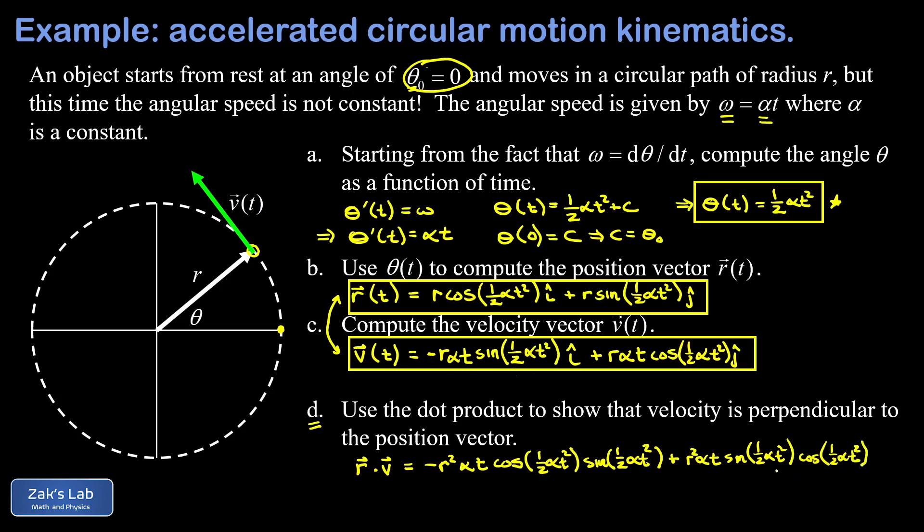So these two terms are actually identical, except one has a minus sign and one has a plus sign. This means our dot product vanishes—it's equal to zero. So there's our verification that even though I have a changing angular speed in this example, our velocity vector is still going to be perpendicular to the position vector. So this accelerated circular motion has that in common with uniform circular motion.